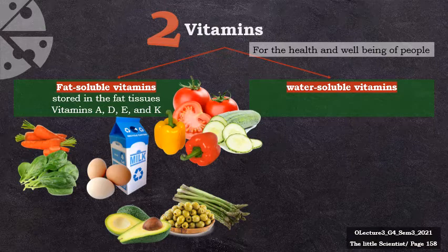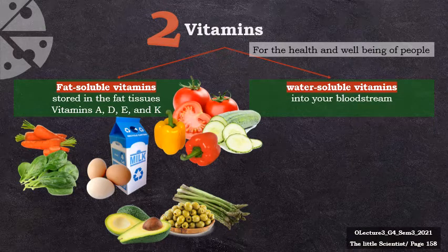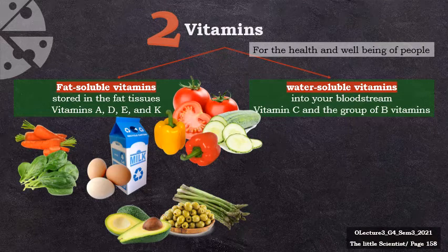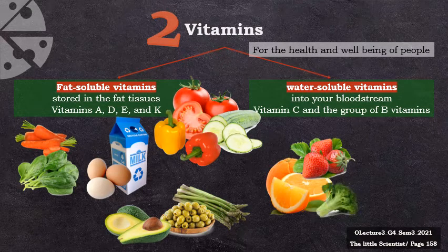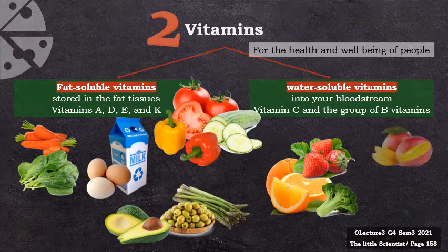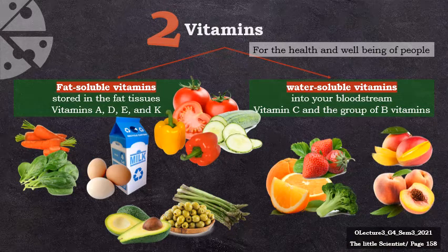Water soluble vitamins are different than fat soluble vitamins. When you eat foods that have water soluble vitamins, the vitamins do not get stored as much in your body. Instead, they travel through your blood, and whatever your body doesn't use comes out when you urinate, so you need to replace them. These vitamins include eight B vitamins and vitamin C. Strawberries, oranges, and broccoli are rich in vitamin C that helps your body heal if you get a cut. And mangoes and peaches are rich in vitamin B.